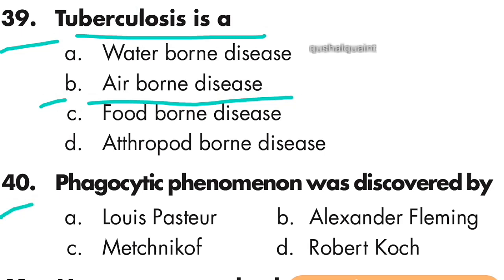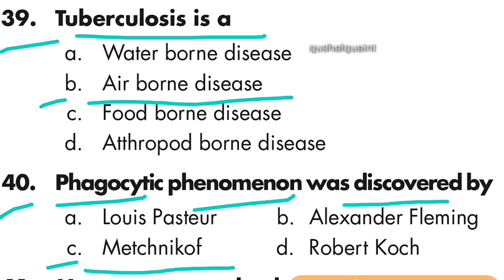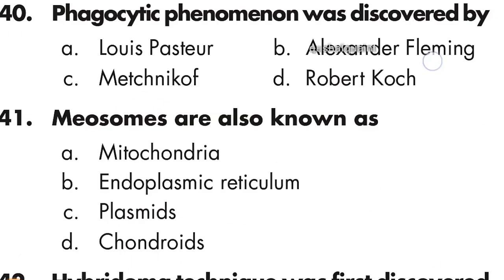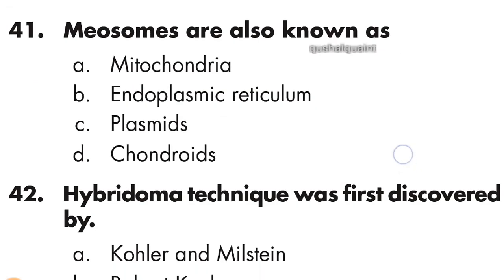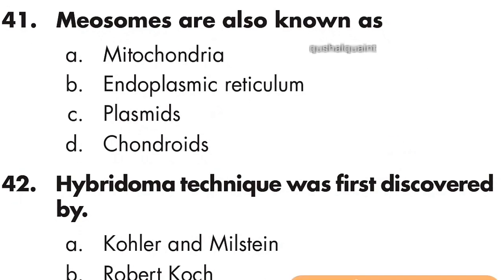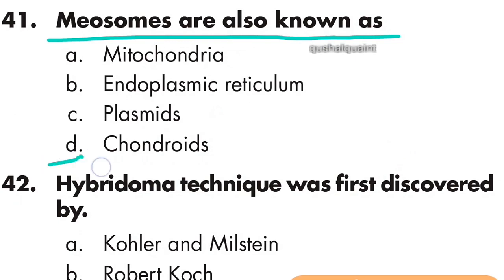Question number 40: The phagocytic phenomenon was discovered by Metchnikoff. Option C is right — Metchnikoff. Question number 41: Mesosomes are also known as chondroids. Option D is right — chondroids.